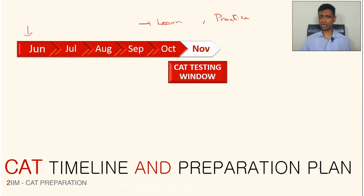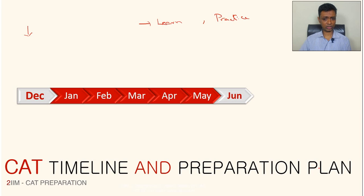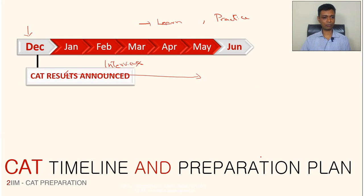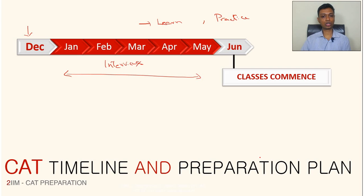The CAT exam window is usually in November, and results are out in December. From January onward you start getting call letters from colleges. The interview process — group discussions and essay writing — runs from February through April. Results come out in May and you'll be joining college in June. So that's the full timeline: exam in November, results in December, call letters from January, interviews from February to April, results in May, college begins in June.